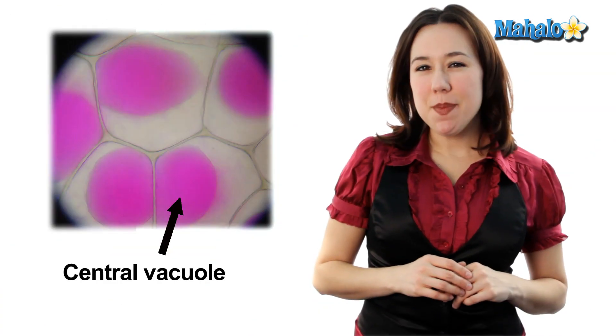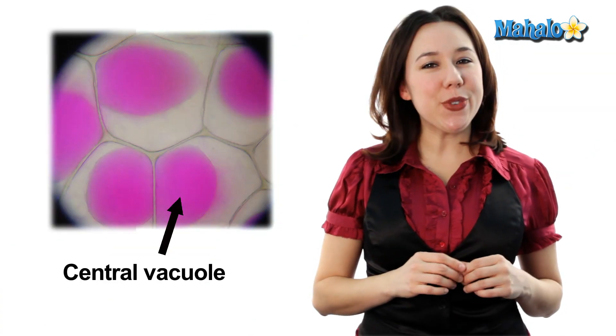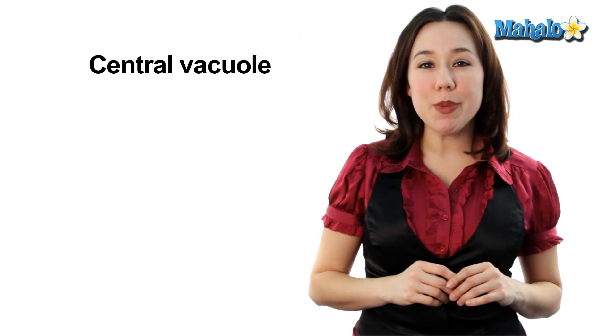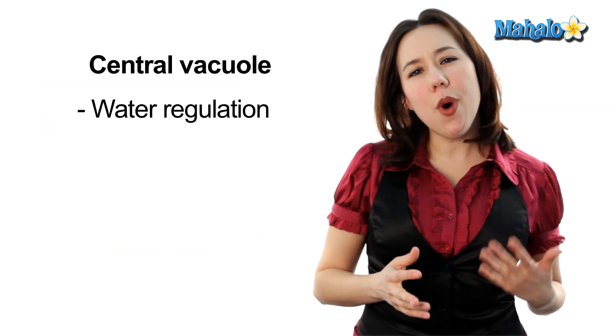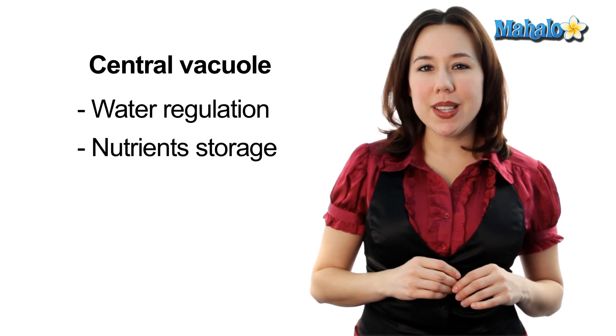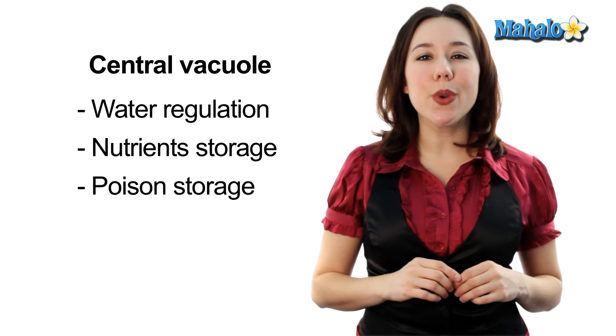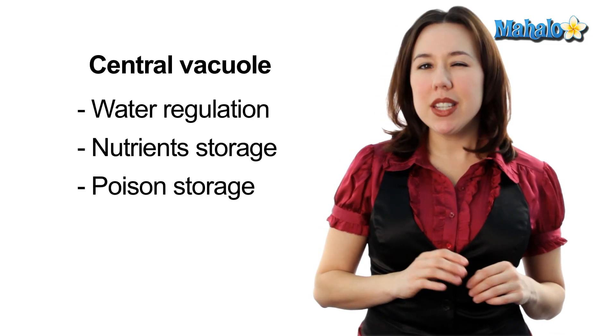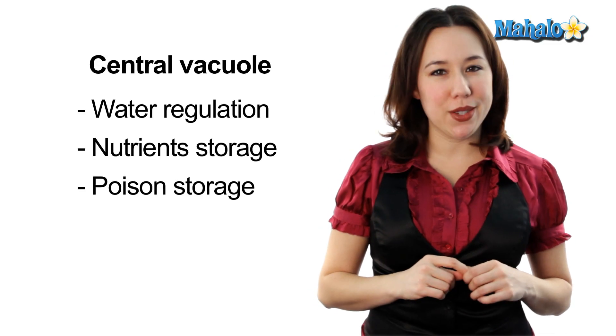Finally, plant cells have a central vacuole. The central vacuole is responsible for water regulation, storage of nutrients, and even sometimes storing poisons, depending on what species you're talking about.